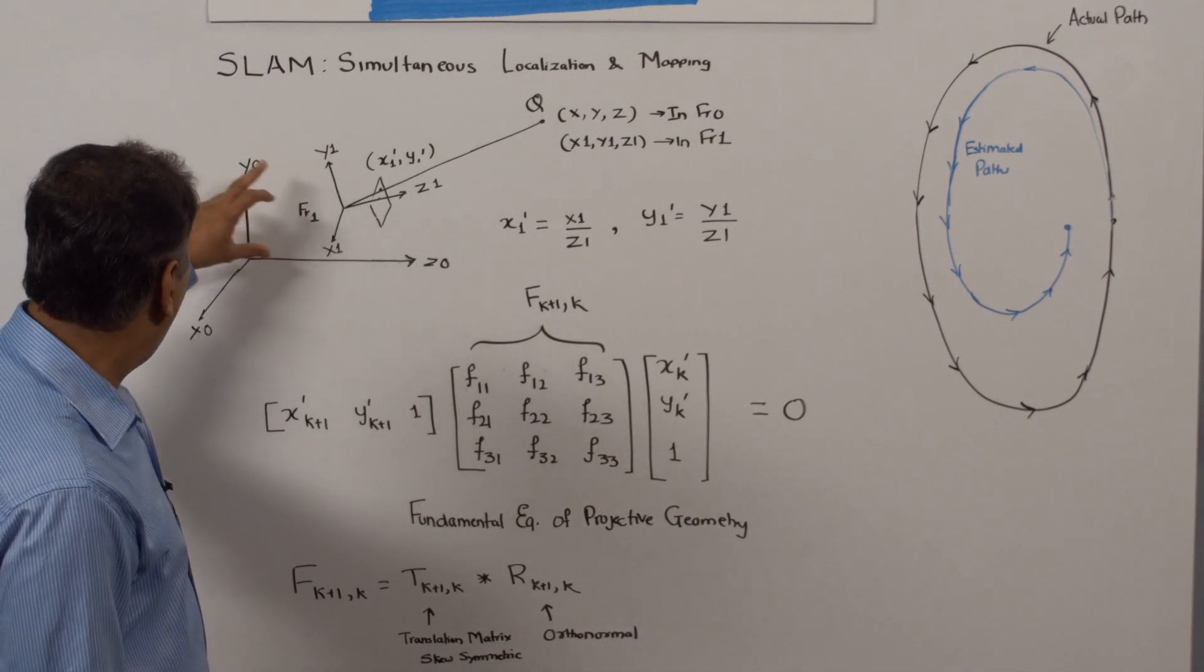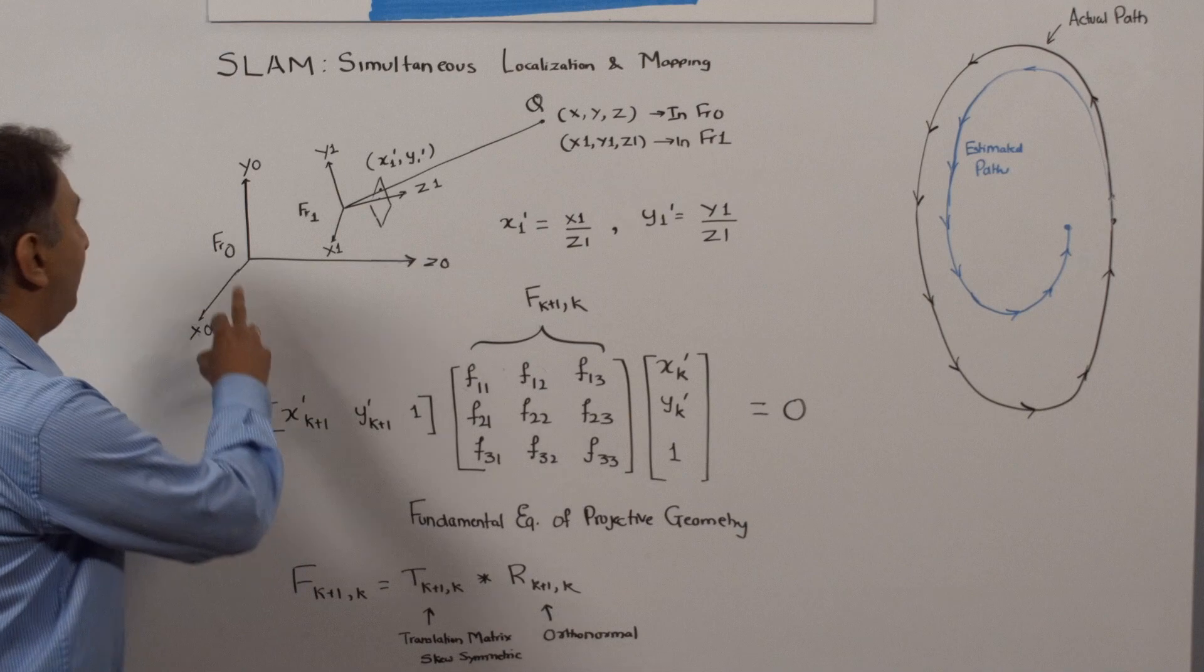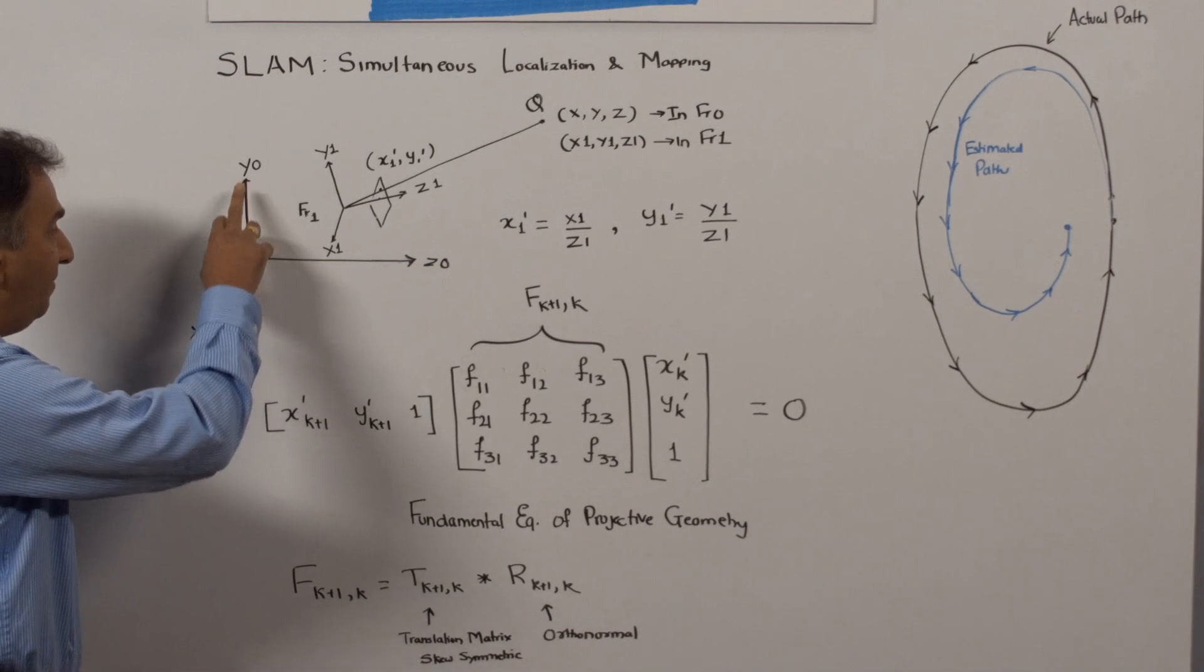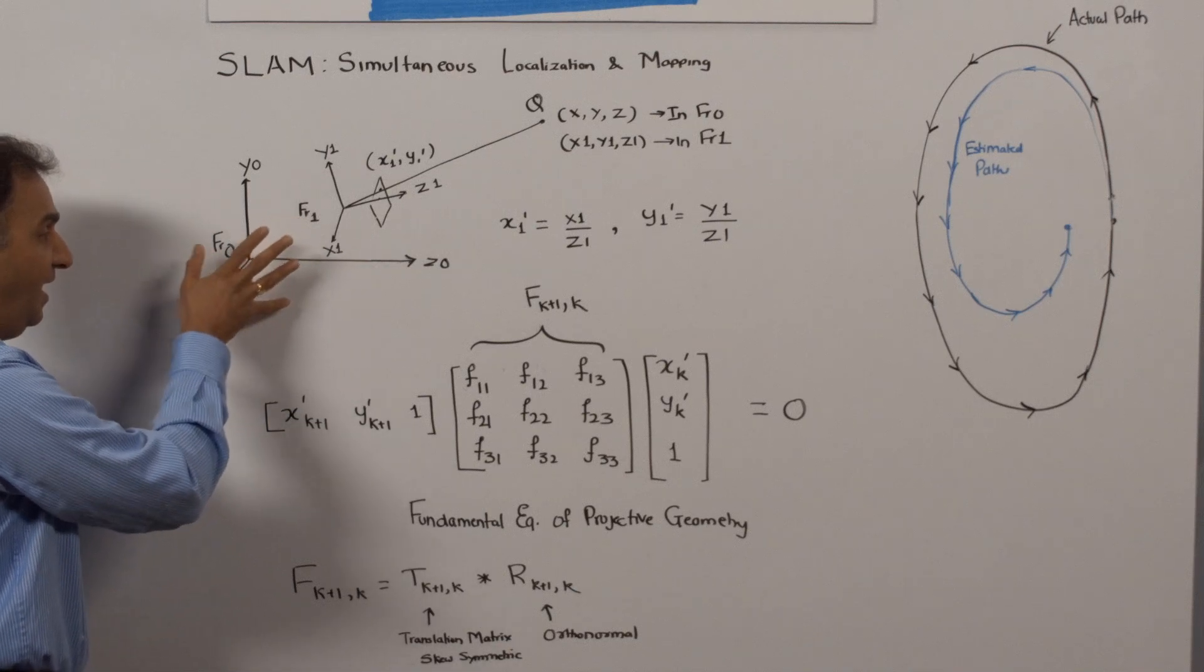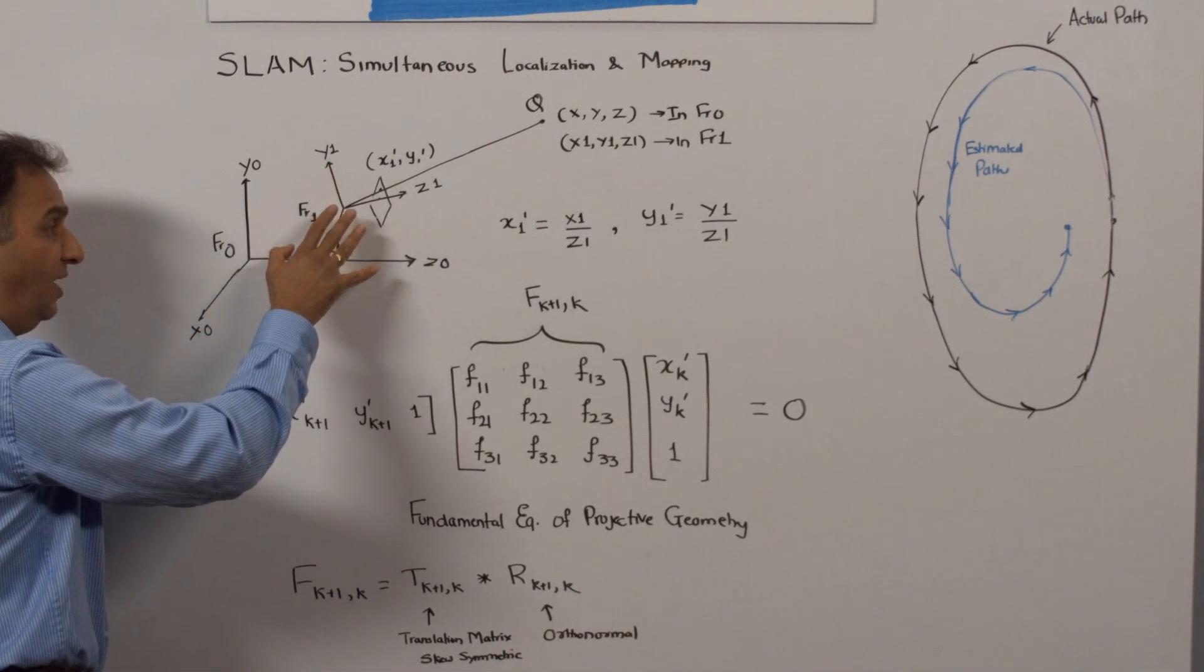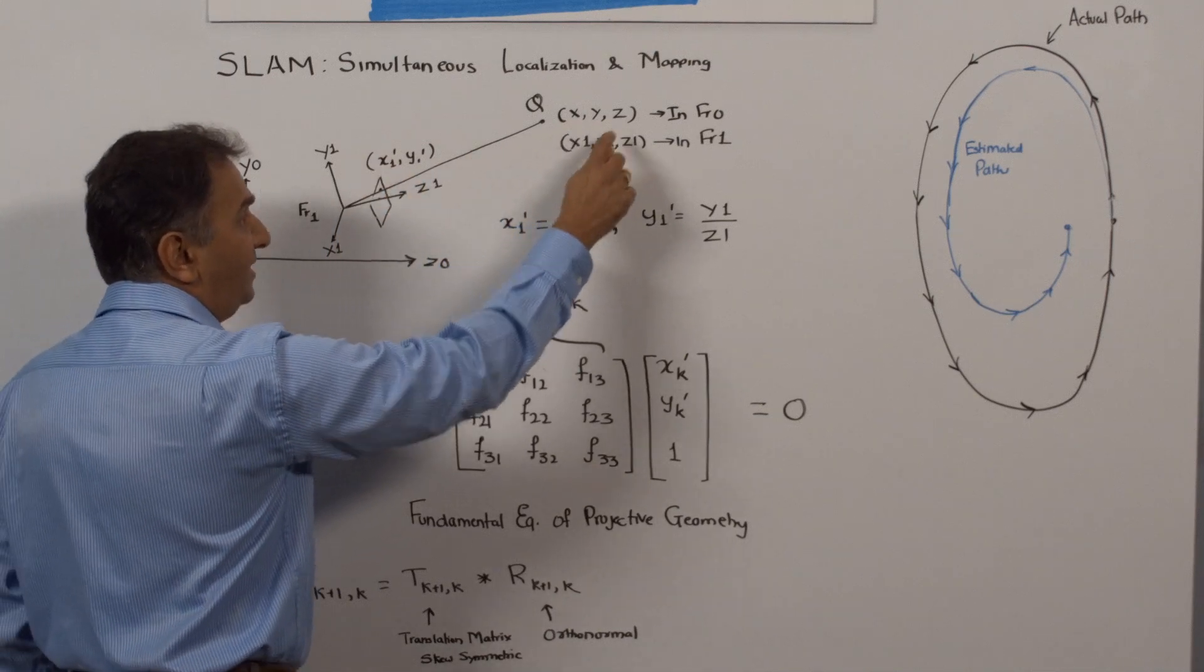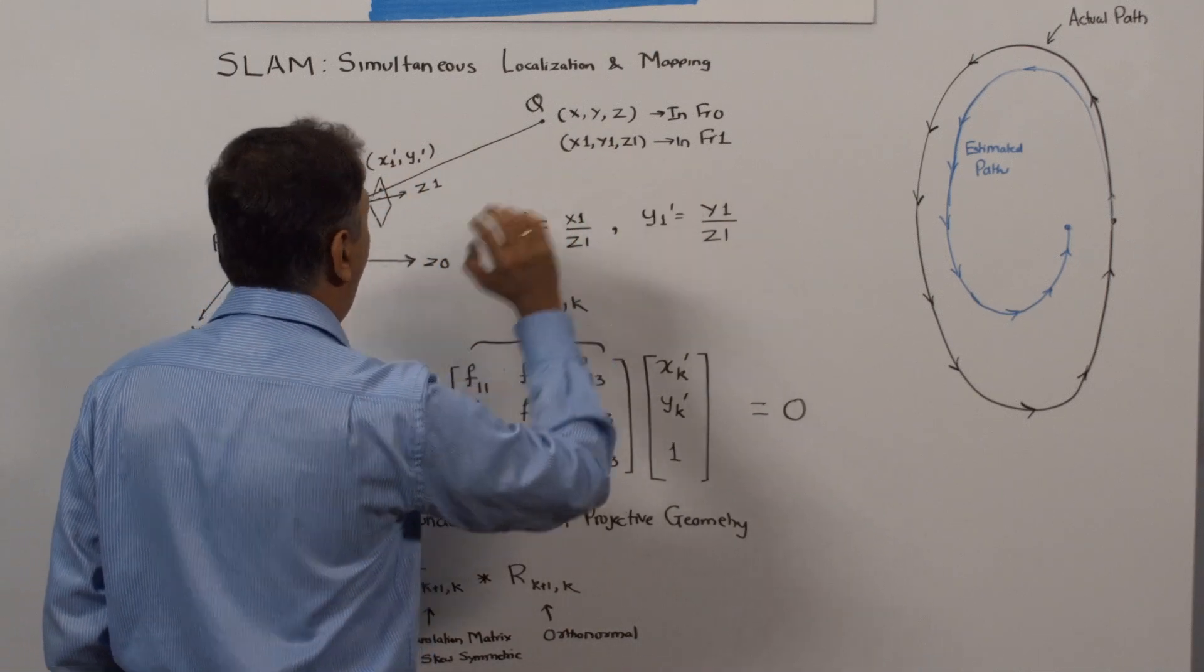For example, we can take the coordinates of the frame 0 or the first initial frame as the global coordinates, and as the camera moves to another location, say in frame 1, this is how the global coordinates, which was x, y, z becomes x1, y1, z1 in frame 1.